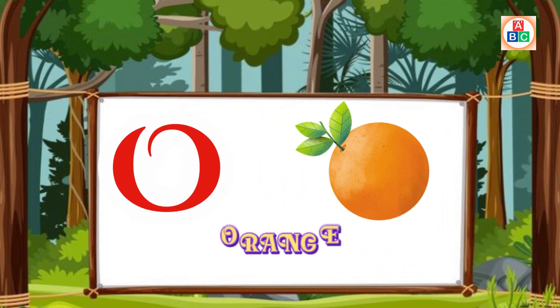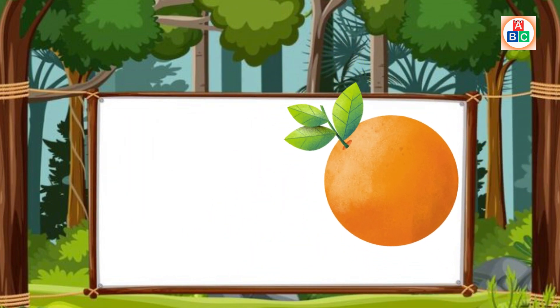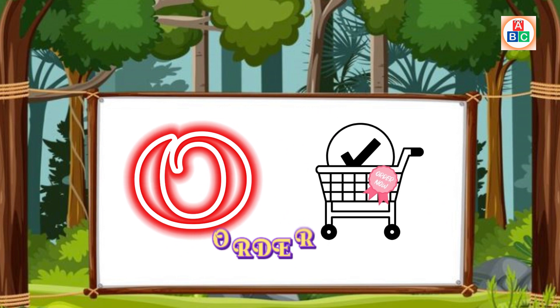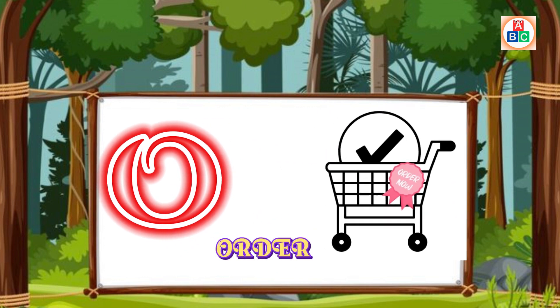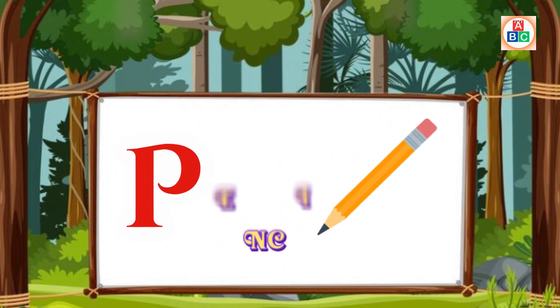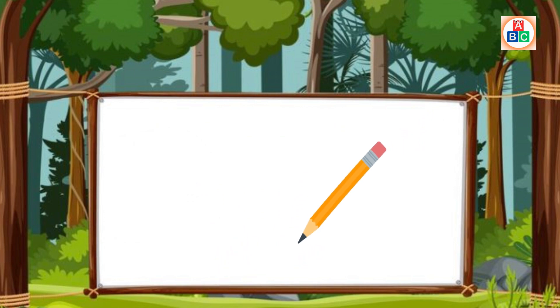O is for Orange. O. O. Orange. O is for Otter. O. O. Otter. P is for Pencil. P. P. Pencil.